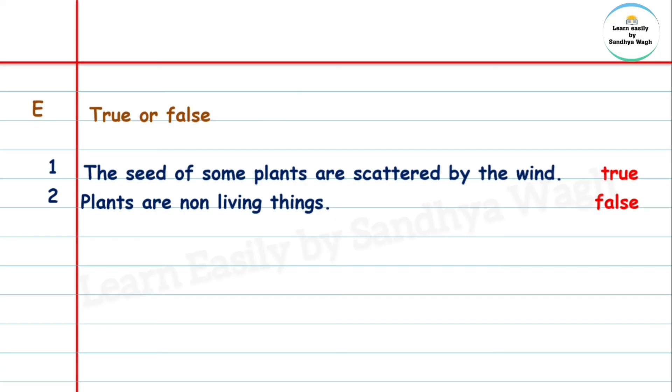Question 3: Sparrows grow by eating insects and food grains. Is this sentence correct? Yes, true.